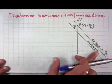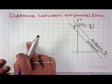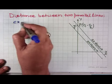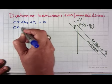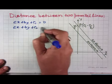In this way we can find the distance between two parallel lines. Here we have two lines: ax + by + c₁ = 0 and ax + by + c₂ = 0. These two lines are parallel because the slope of the first line is −a/b and the slope of the second line is also −a/b, so their slopes are equal.